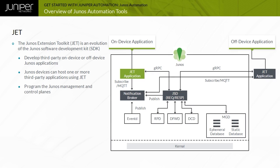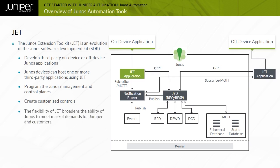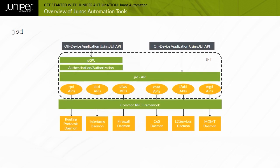Customers can use JET to create customized CLI commands and SNMP MIBs instead of waiting for Juniper to add the functionality to the Junos OS. The flexibility of JET broadens the ability of Junos to meet market demands. All communication generated using the CLI, NETCONF, and the REST API pass through the management or MGD process.